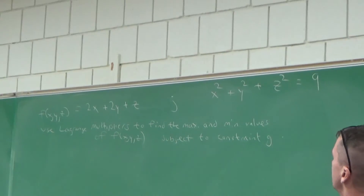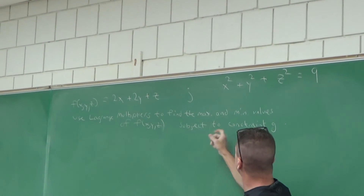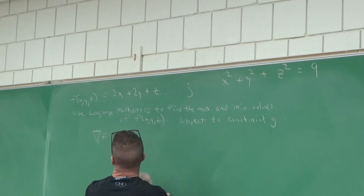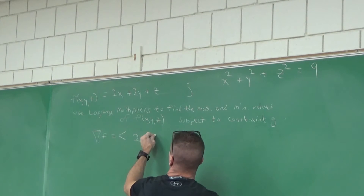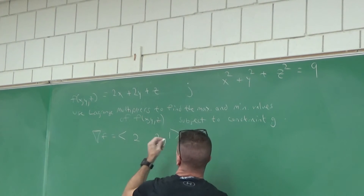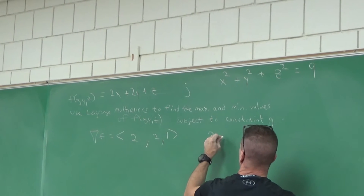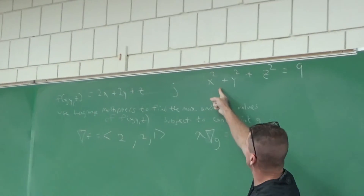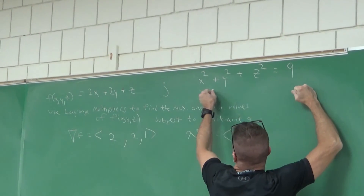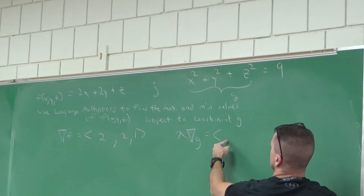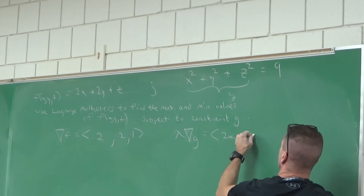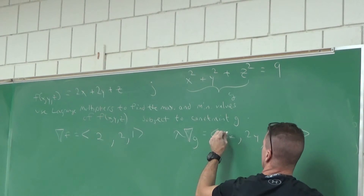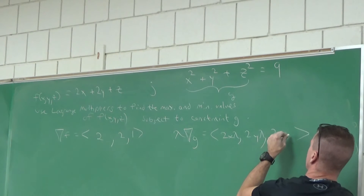So we're going to use Lagrange multipliers to find the maximum values of the function f(x, y, z) subject to constraint g. I'll start by getting del f: partial with respect to x is two, partial with respect to y is two, and partial with respect to z is one. Now lambda del g — the constraint is g, so partial with respect to x is 2x, partial with respect to y is 2y, partial with respect to z is 2z. Distributing the lambdas: 2x lambda, 2y lambda, and 2z lambda.